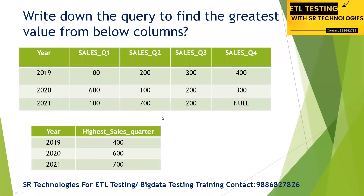Hi guys, good morning, good afternoon, good evening. We are going to go with another ETL testing interview question. Let's understand this question. We have a year column and each quarter has separately created sales data — in 2019, 2020, and 2021.